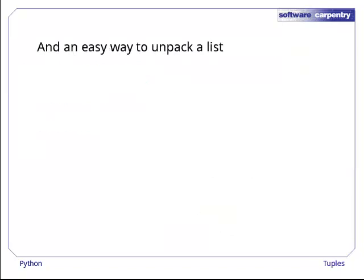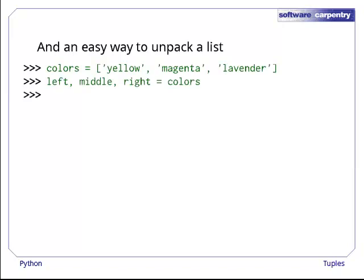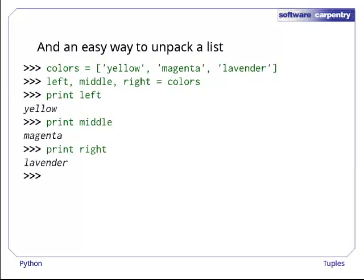Multi-valued assignment is also a quick and easy way to unpack the elements of lists. If colors holds the strings yellow, magenta, and lavender, and we assign colors to a trio of variables called left, middle, and right, then sure enough, left has been assigned yellow, middle has been assigned magenta, and right has been assigned lavender.